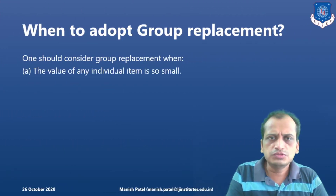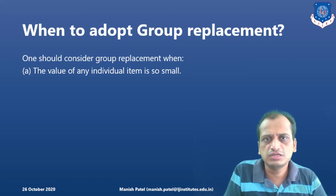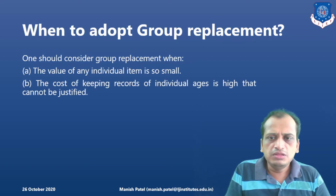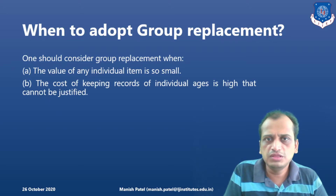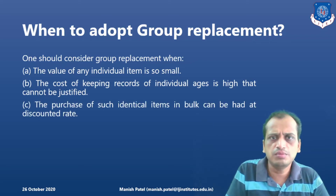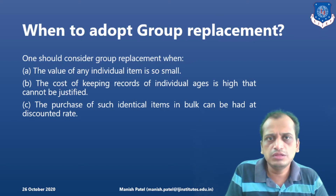When to adopt group replacement? First, the value of the item is very small — for example, light bulbs have very small value. Second, the cost of keeping records of individual ages is high and cannot be justified. If you have thousands of bulbs installed, it is very difficult to keep track of each one. Also, purchasing such identical items in bulk can be at a discount rate — if you buy bulbs in bulk, you get discounts, so you can replace them in a group.